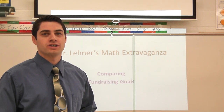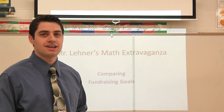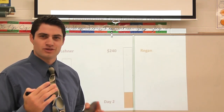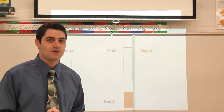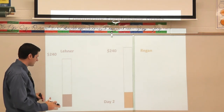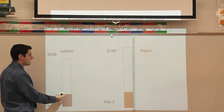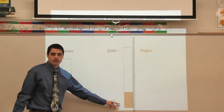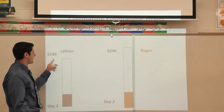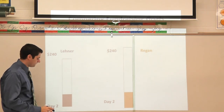In today's webisode we're going to take a look at some thermometers again and compare some of the data we see inside them. Let's look at Mr. Lehner's class and Mrs. Regan's class and compare the progress they've made. This is the progress each teacher's class has made after two days, and their goal is to raise two hundred and forty dollars.